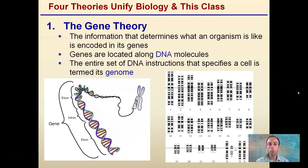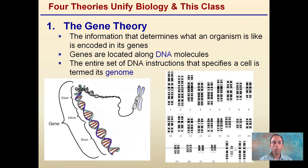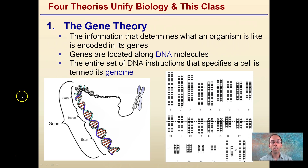Getting into the four theories, the first one is gene theory. The information that determines what an organism is like is encoded in its genes. Genes are located along DNA molecules — deoxyribonucleic acid. The entire set of DNA instructions that specifies a cell is termed its genome. While we pretty much accept this as fact, it is explained through gene theory — something scientists are about 99% certain about, even though it's called a theory, not in the way the general public would define that word.